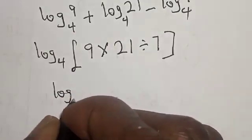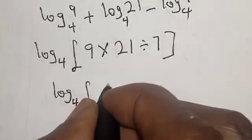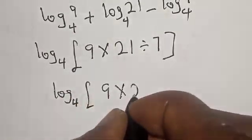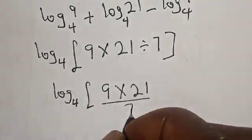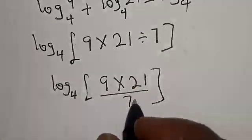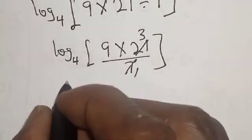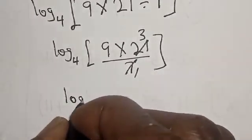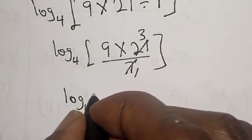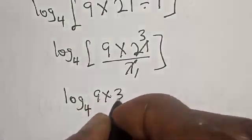Now log₄ (9 × 21 ÷ 7). The 7 here and the 7 here cancel, leaving 21 becomes 3. Now log₄ (9 × 3).